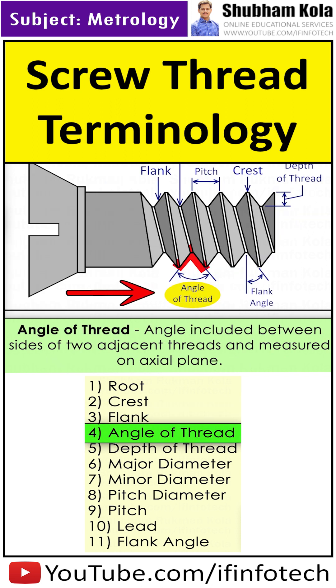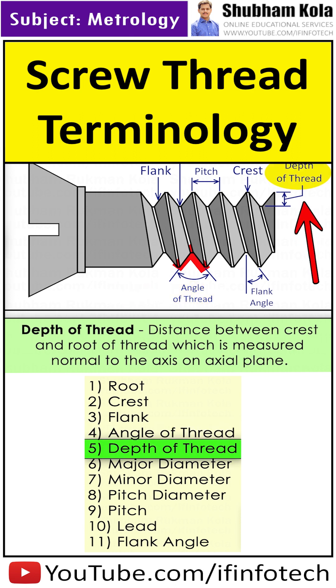The angle of thread is the angle included between the sides of two adjacent threads. The depth of thread is the distance between the crest and root of the thread.